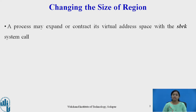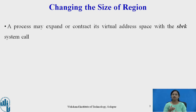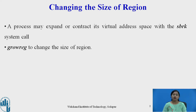Changing the size of a region is invoked whenever a process may expand or contract its virtual address space — when a process wishes to expand or contract its address space. This happens whenever a process invokes the SBRK system call, or whenever a process invokes the grow region algorithm. In grow region, there is only one case where a process may expand its region, expanding its process address space. So grow region is used to change the size of a region.